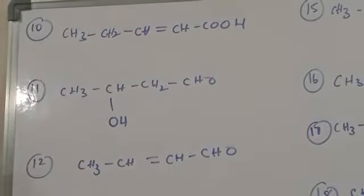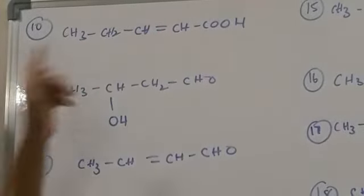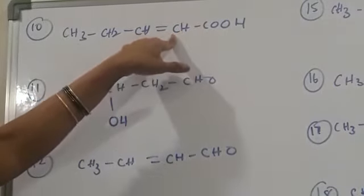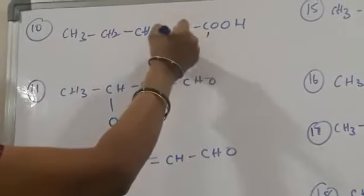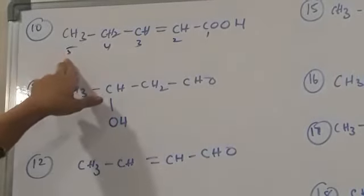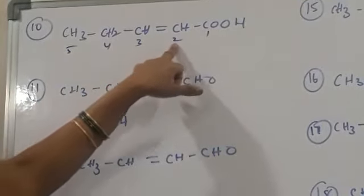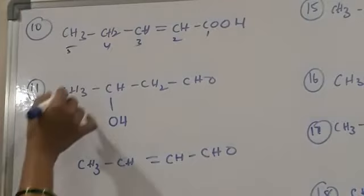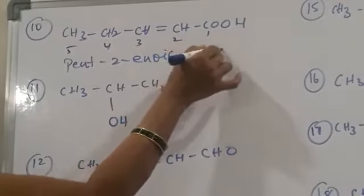Next compound. Carbon having 5 carbon atoms and main functional group is carboxylic group. Unsaturation is also there — a double bond is also there. Numbering starts from this side: 1, 2, 3, 4, 5. So root word is pent. Unsaturation is present at second carbon. So the IUPAC name is pent-2-enoic acid.